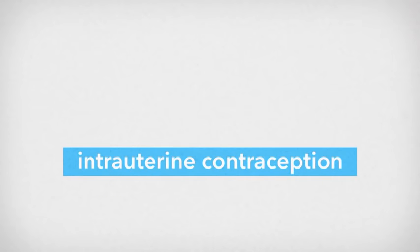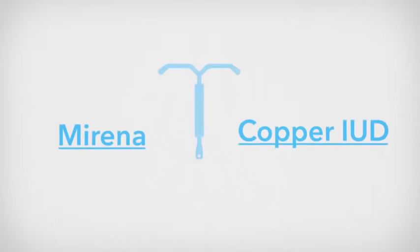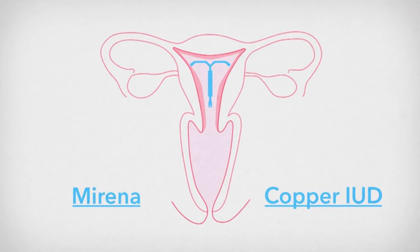This film introduces the two types of intrauterine contraception available, the Mirena and the Copper IUD. The Mirena and the Copper IUD are both small plastic T-shaped devices that sit inside the womb. Two soft threads at the bottom sit high up inside the vagina.